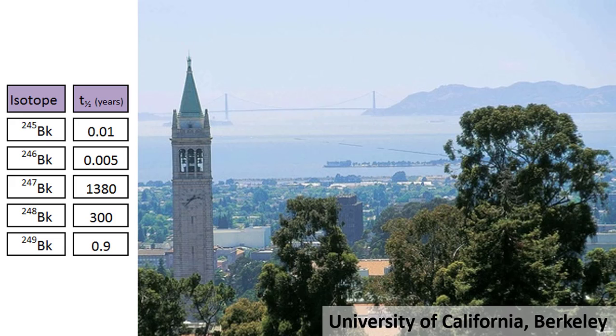Its longest-lived isotope is berkelium-247 at 1,380 years. However, this isotope is rather difficult to make, so the most synthesized berkelium is in fact berkelium-249.